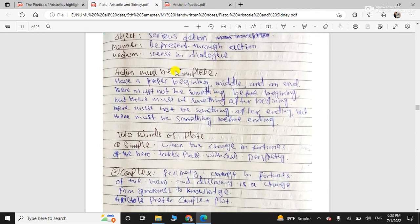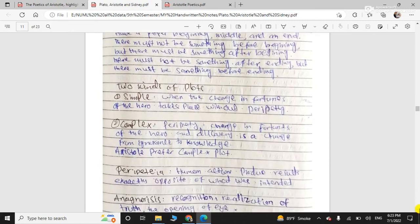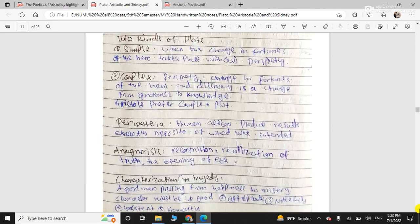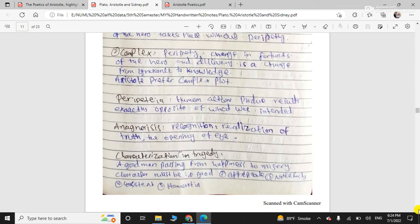Action. What kind of action? How should action be? It should be complete, having a proper beginning, middle and an end. So, two kinds of plot we talked about. Simple and complex. Simple plot: when the change in the fortunes of the hero takes place without any peripety, then it is called a simple plot. Whereas, the complex plot has peripety changes in heroes. And discovery is a change from the ignorance to knowledge. So, he preferred complex plot.